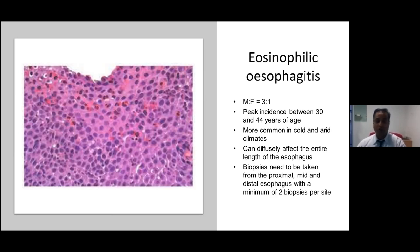Eosinophilic esophagitis is most commonly male-predominant with peak incidence ranging from 30 to 44 years of age. It is most commonly seen in cold and arid climates and can diffusely affect the entire length of the esophagus, although upper and middle esophagus is commonly involved. Biopsies need to be taken from proximal, mid, and distal esophagus with a minimum of two biopsies per site.